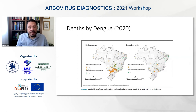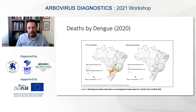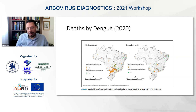Looking at dengue deaths in 2020, the majority were concentrated in the Middle West region, along the São Paulo and Paraná borders.